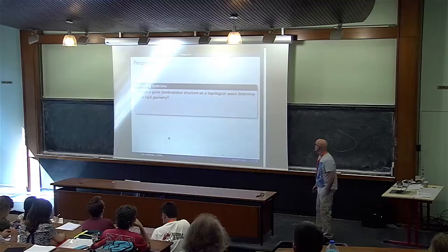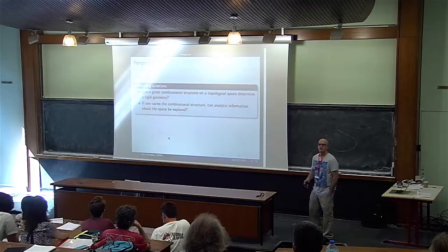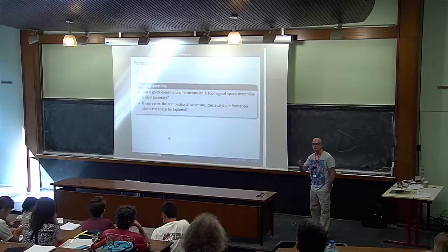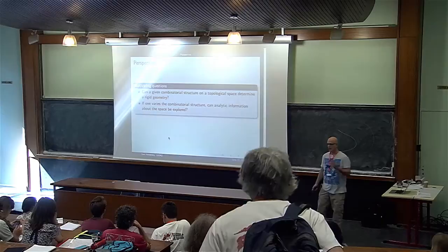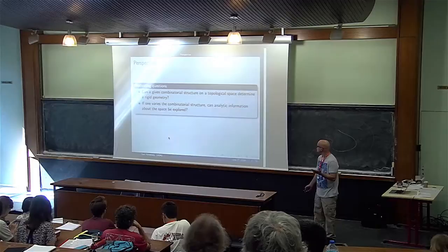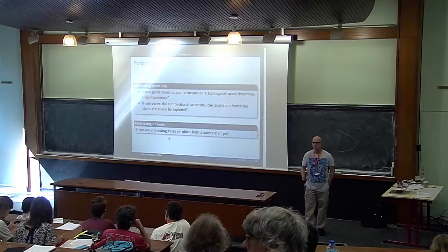The second question: if one varies the combinatorial structure — think about the case where the combinatorial structure is a triangulation — think about refining the triangulation. Can you obtain some analytic structure or analytic information about the space? These are two good motivating questions because there are interesting cases in which both answers are yes.